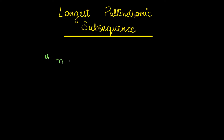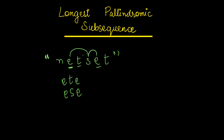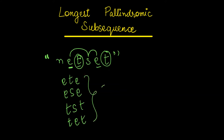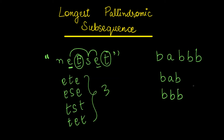Let's say I take the example 'netset'. I need to find out all possible subsequences. It can be ETE, which is also palindromic, or ESE, or TST or TET — so in all these cases they are making a length of three. Let's take another example: BABBB. If I take out the palindromic subsequence, it can be BAB, which is also palindromic.